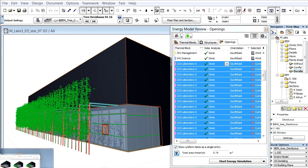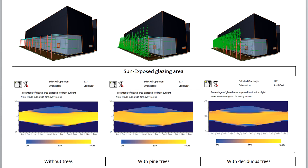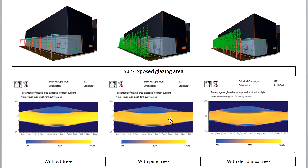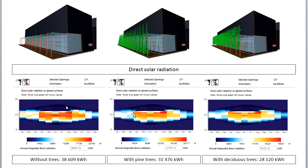Now let's compare the previously displayed results of the solar analysis calculations. Here you can see the chart displaying the performance of glazed area exposed to sunlight in all three cases. The first chart indicates the results without any trees, and here you can see the brightest yellow colors, meaning this option indicates the highest ratio of direct sunlight. Below the direct solar radiation chart, the annual integrated direct radiation is displayed. The second chart indicates the results with pine trees, providing continuous shading throughout the year. Here you can investigate almost identical results, but please note that the darker yellow colors refer to a lower ratio of direct sunlight, therefore the annual integrated direct radiation will also be much less.